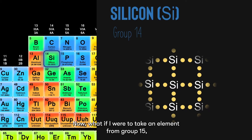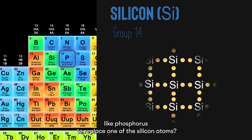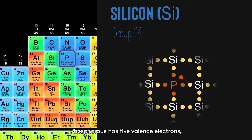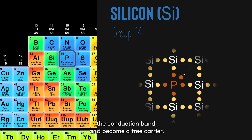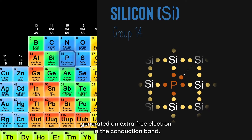What if we were to take an element from group 15, like phosphorus, to replace one of the silicon atoms? Phosphorus has five valence electrons, so there is one remaining electron unable to form a covalent bond. This unbonded electron can very easily enter the conduction band and become a free carrier. This means we have generated an extra free electron in the conduction band.